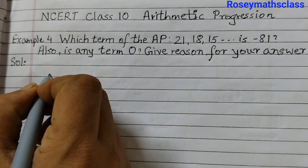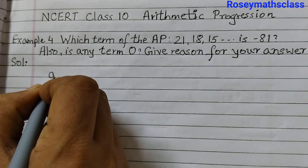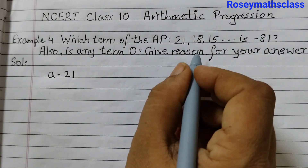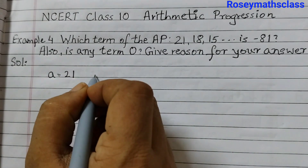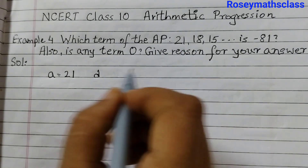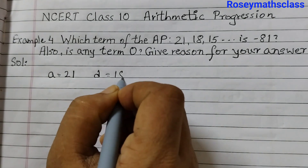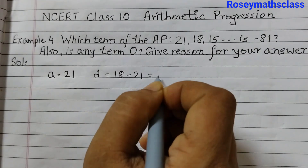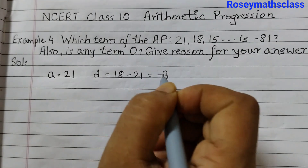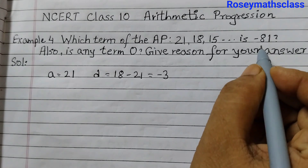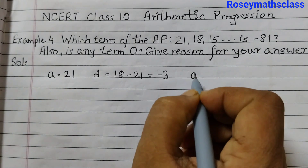Here we are given an AP. The first term A is 21. The common difference we can find out by subtracting the first term from the second term, so that's 18 minus 21, which is equal to minus 3. We need to find out which term is minus 81, so we don't know N.